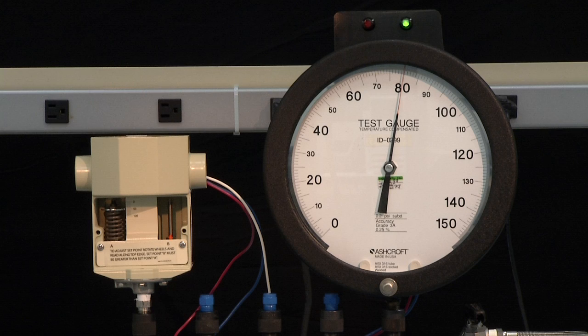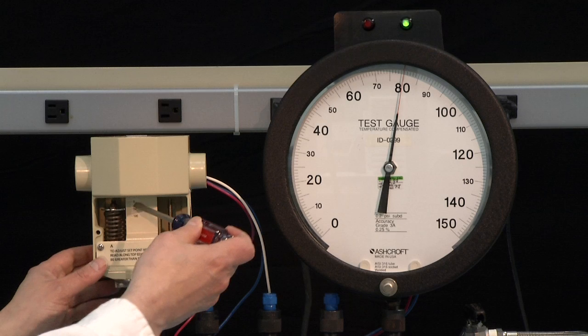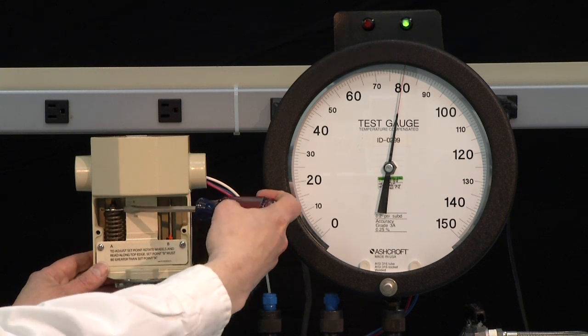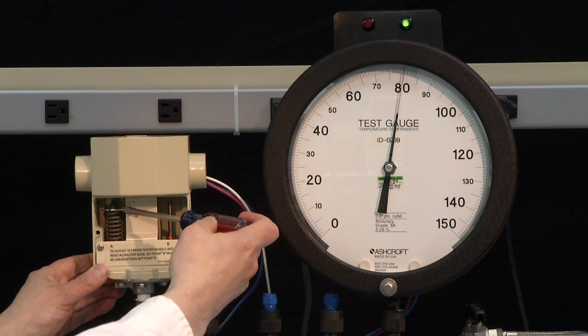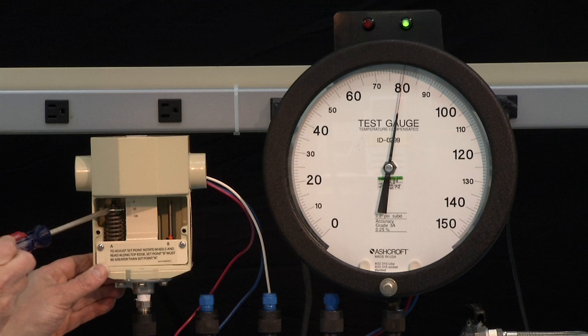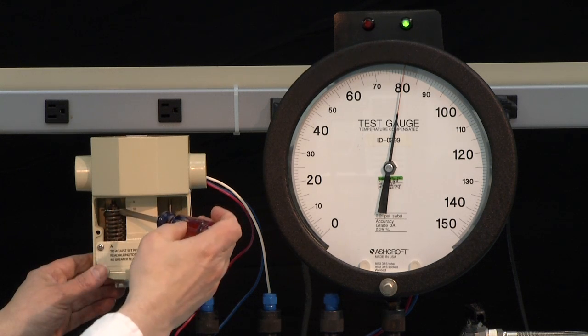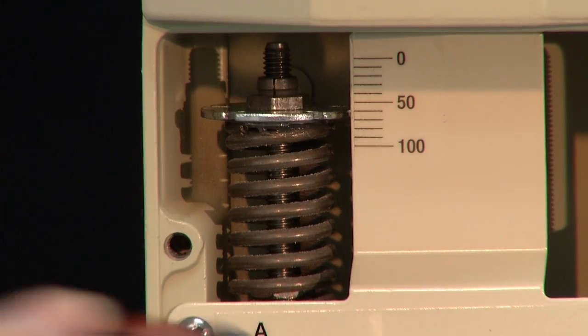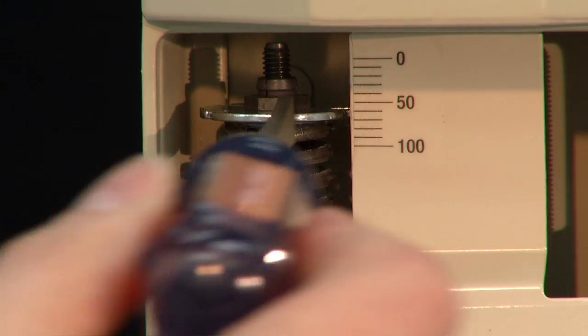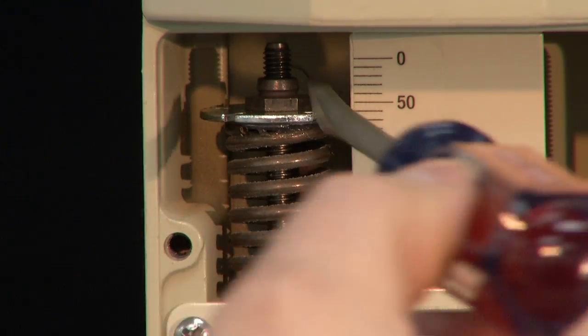Now, we are going to increase the set point of the switch, because it's already turned on, until it turns off, and then lower it back until it turns on again. We will set at 80 PSI increasing. We will start by putting a screwdriver into the slots onto the adjustment disk and turning it in a clockwise direction to increase the set point of the switch. We are going to do this all the way until the switch resets.